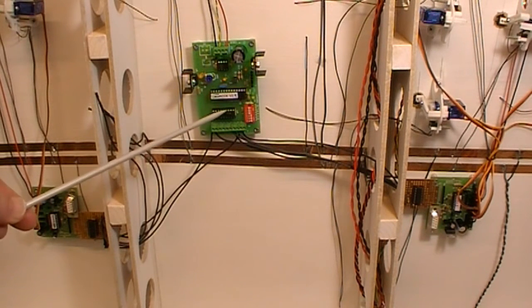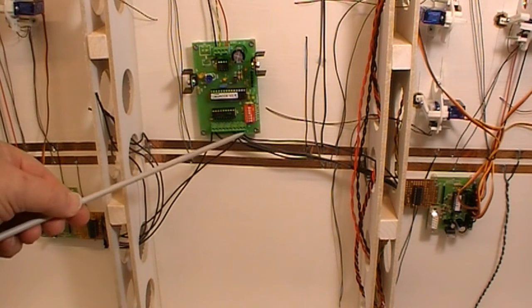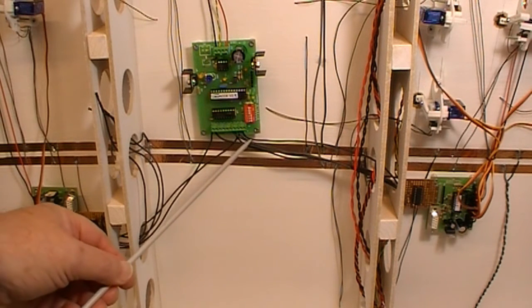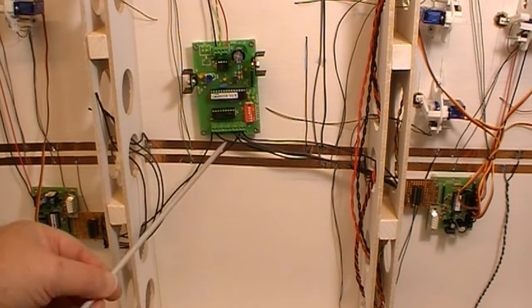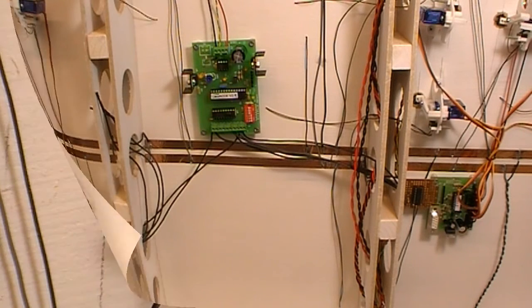This is one of the MERG control boards. This actually is an output board and can drive up to eight signals. I've only got four of them wired at the moment to four servos on here and one servo on here, and they control the points. The reason there are one servo and four is that two of the servos are driven together because there's a crossover and both points are driven at the same time.